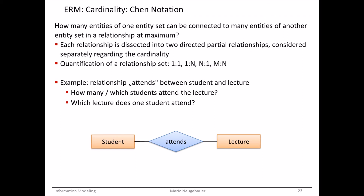If we apply that model of thinking onto our concrete ERM here in the bottom area — student and lecture — then we can ask two important questions describing the different directions. The first is: how many students attend the lecture? And the other question, which is important from the view of the student, is: which lectures does one student attend, or which lectures do I have to attend? For the professor who holds the lecture, it's important to see how many or which students attend. And for the student, it's important to see which lectures they have to go to.